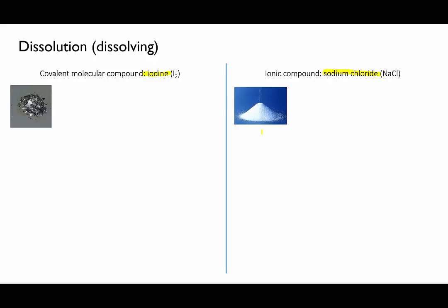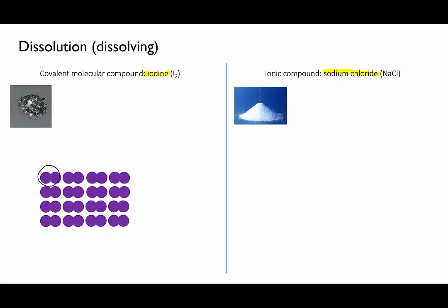If we now zoom down to the molecular or ionic level, a crystal of solid iodine is made of individual iodine molecules, diatomic I2 molecules, these ones here, arranged regularly in a lattice and held together by weak attractions between the molecules. Iodine is a covalent molecular substance, so within each molecule the two iodine atoms are held together by a covalent bond.